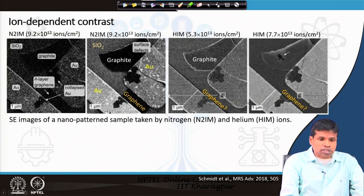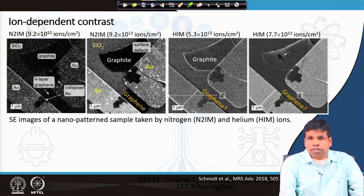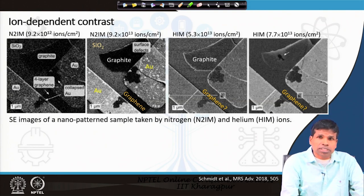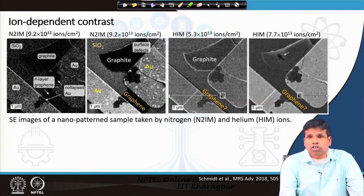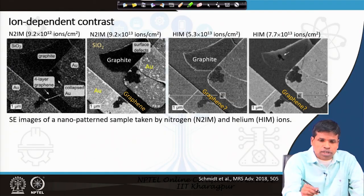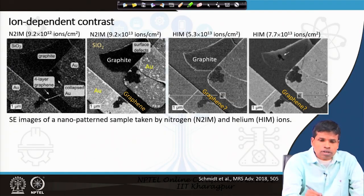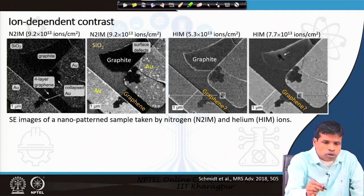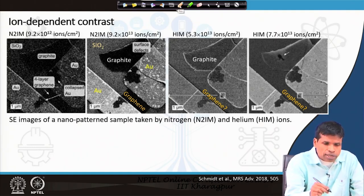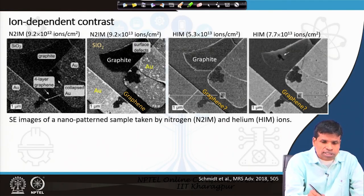Ion-dependent contrast: by changing helium to other ions, a drastic contrast difference can also be produced. We will stop here for today and continue with ion-dependent contrast in our next lecture.